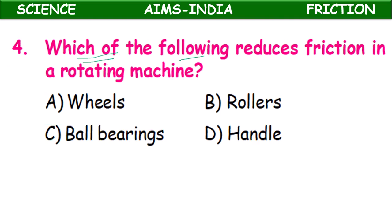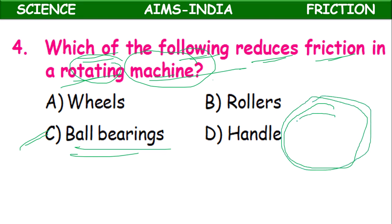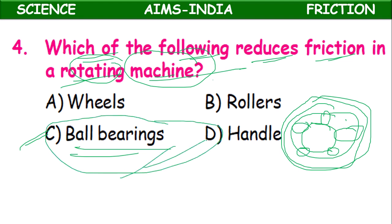Fourth question: Which of the following reduces friction in a rotating machine? In rotating machines, we make use of special structures called ball bearings — small balls — to reduce friction.